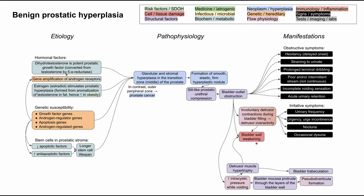The bladder wall gets weaker in several ways: it enlarges from high pressures, becomes irritated from detrusor overactivity, and is constantly partially full due to outlet obstruction. This bladder wall weakening leads to incomplete voiding and urinary stasis — the patient can't empty their bladder completely, so urine stays stagnant inside. Stagnant urine can lead to bladder stones, similar to how stagnant bile leads to gallstones or stagnant urine in the kidneys leads to kidney stones.